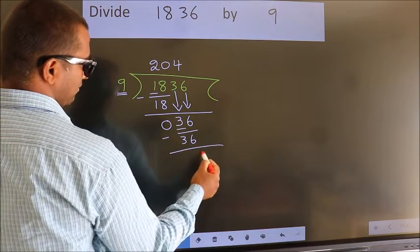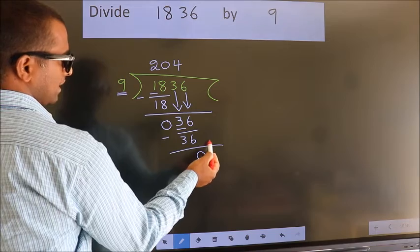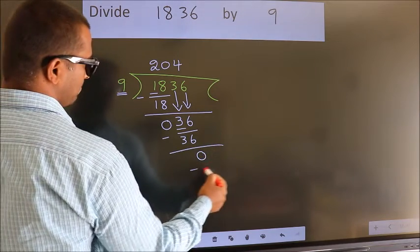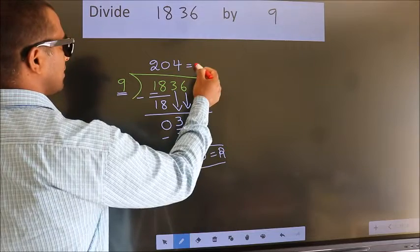9 fours 36. Now we subtract. We get 0. No more numbers to bring it down. So we stop here. This is our remainder. This is our quotient.